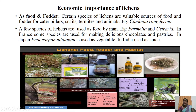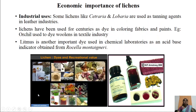Lichens are used as spice and as food for birds and animals like reindeer. Coming to the industrial uses of lichens — some lichens like Cetraria and Lobaria are used as tanning agents in the leather industry. Lichens have been used for centuries as dye in coloring fabrics and paints. For example, orchil is a dye extracted from lichen used to dye woollens in the textile industry. Litmus is another important dye used in chemical laboratories as an acid-base indicator, obtained from the species Roccella.